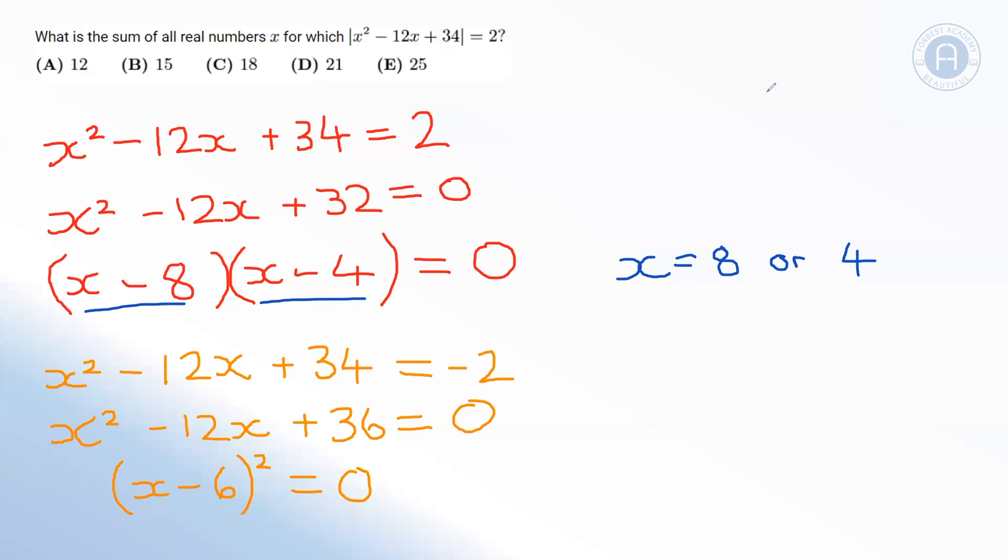And again, if this is equal to 0, we have only one solution this time, and that is that x must equal 6 for that to equal 0. So we have three solutions here: x equals 8, x equals 4, or x equals 6.